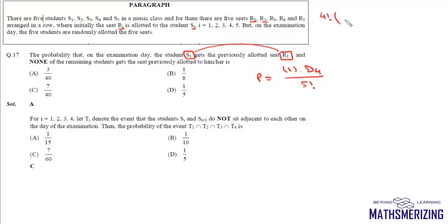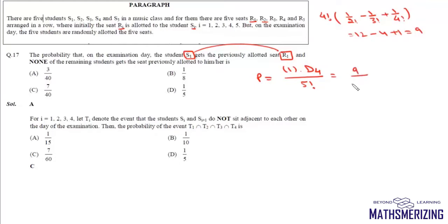D4 equals 4 factorial times (1 upon 2 factorial minus 1 upon 3 factorial plus 1 upon 4 factorial). This gives 12 minus 4 plus 1, so 13 minus 4 equals 9. So this probability is 9 by 120, which is simply 3 by 40, and that's option A.